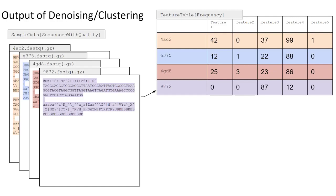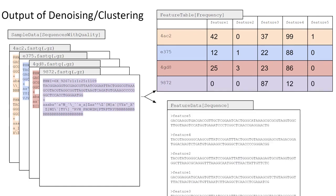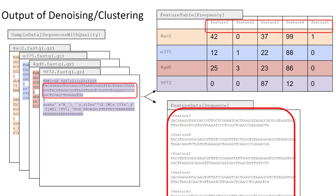The second important output artifact we get from this process is a set of representative sequences. This representative sequence file, which is of the type feature data sequence, is essentially a list of the unique features found across our entire dataset and their corresponding DNA sequences. Unlike the feature table, this artifact does not hold any information about the actual frequency of these features or their association with any particular sample. This file is used in downstream processes, for example, when we want to construct a phylogenetic tree for our dataset, or assign taxonomic classification to our features.